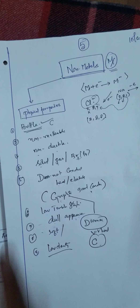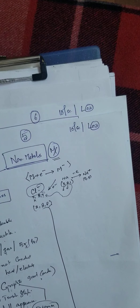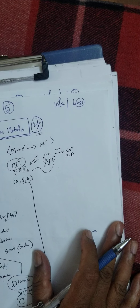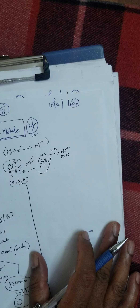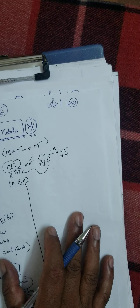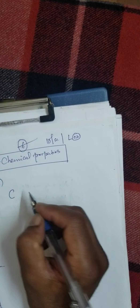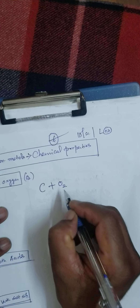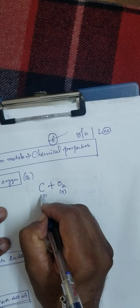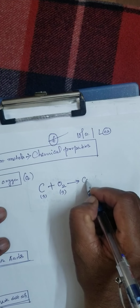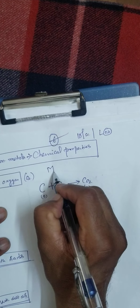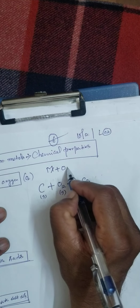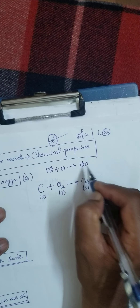These are the physical properties of non-metals. Now, the chemical properties of non-metals: reaction with oxygen. Carbon reacts with oxygen gas to form carbon dioxide — non-metal plus oxygen gives non-metal oxide.